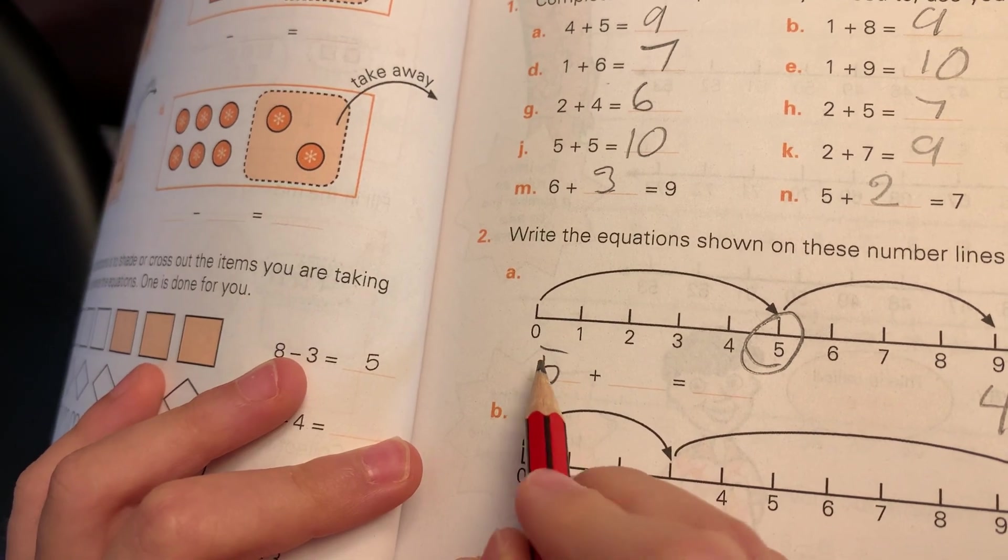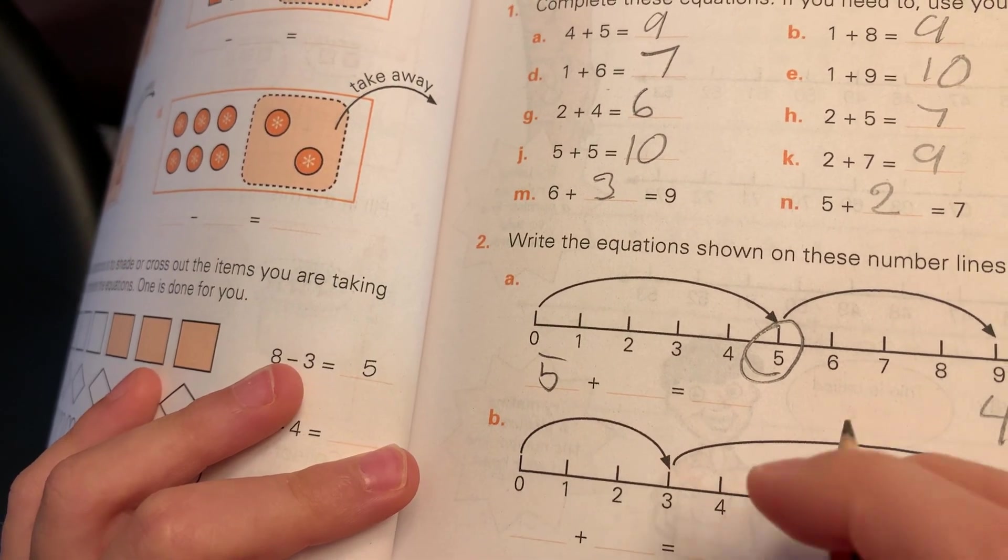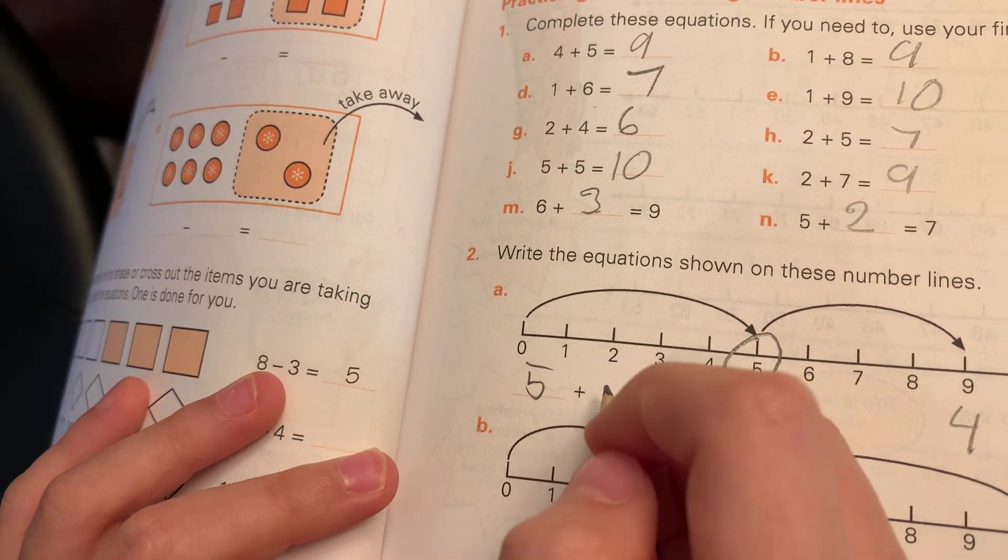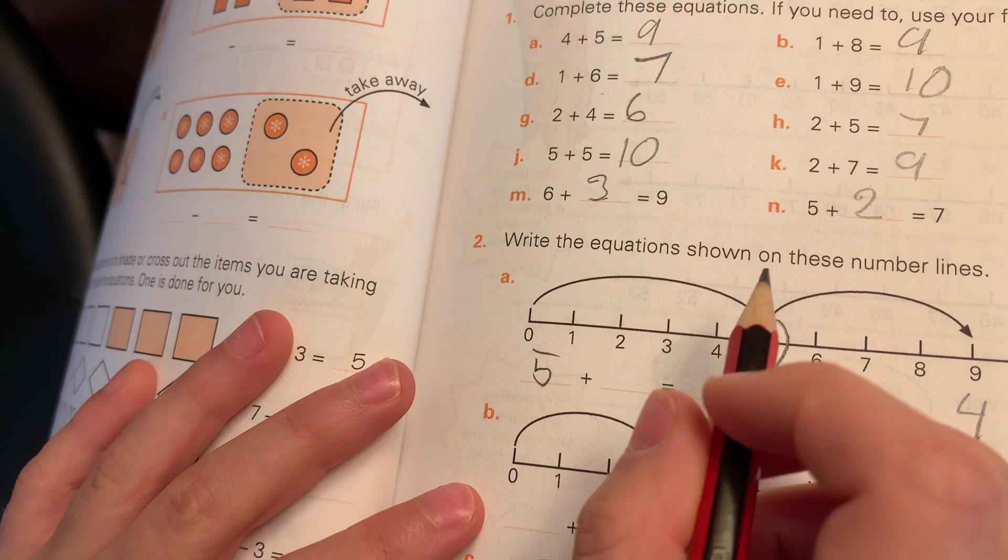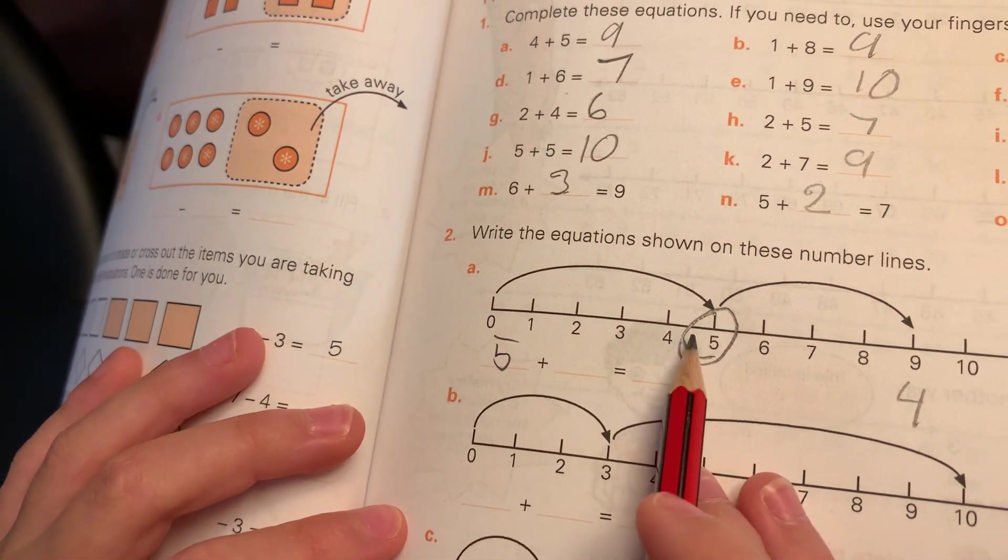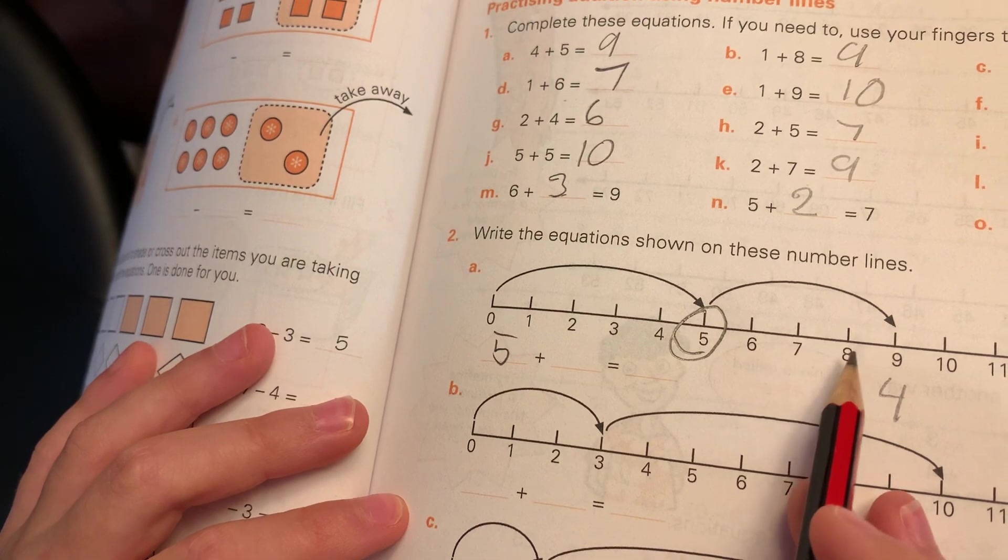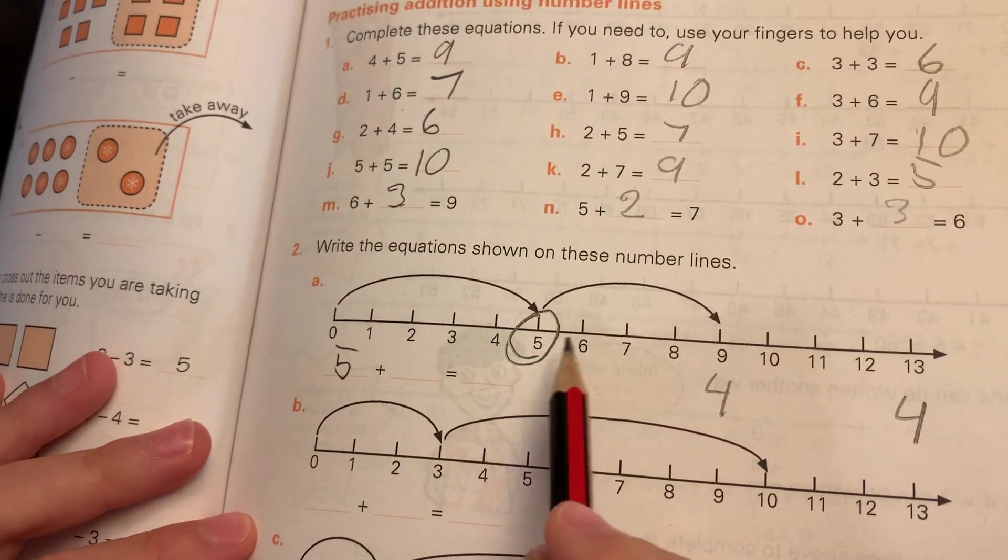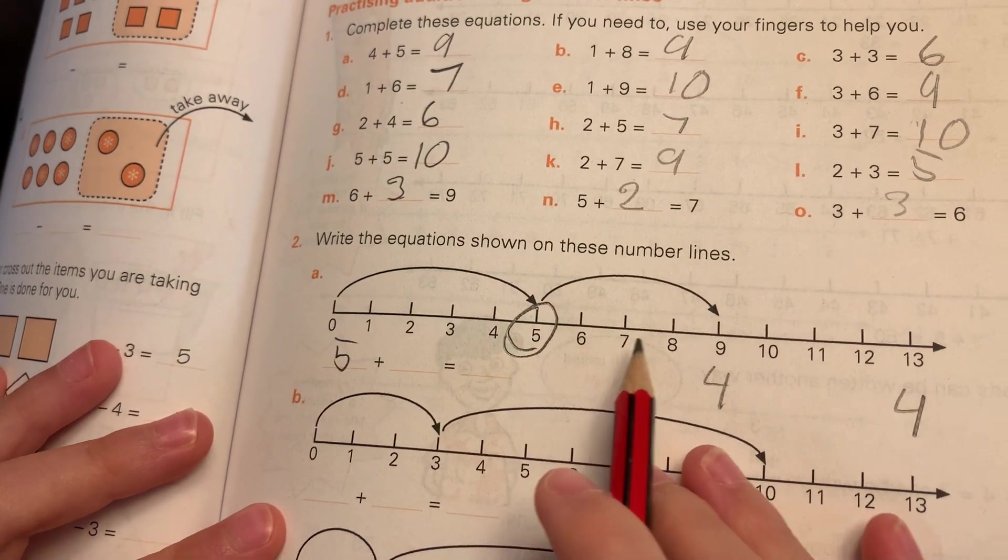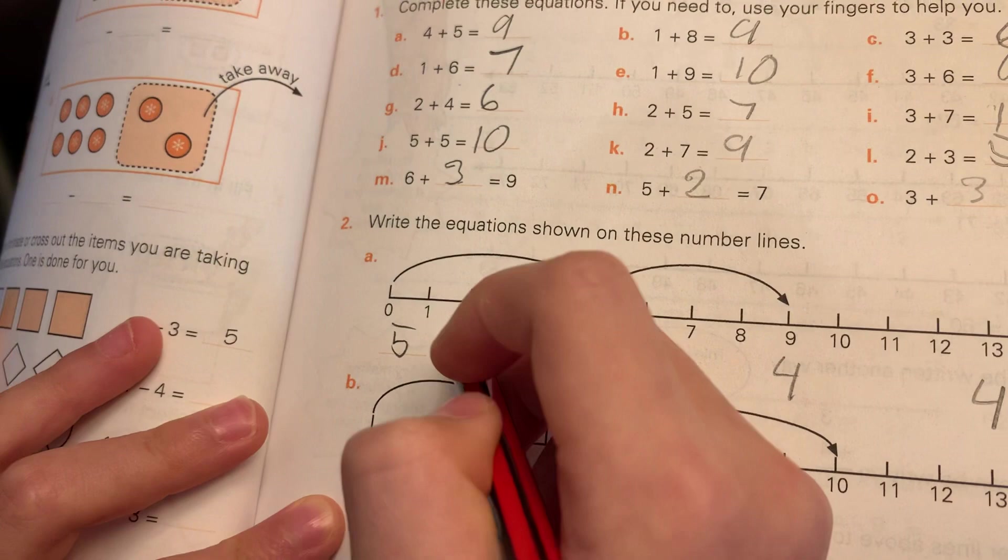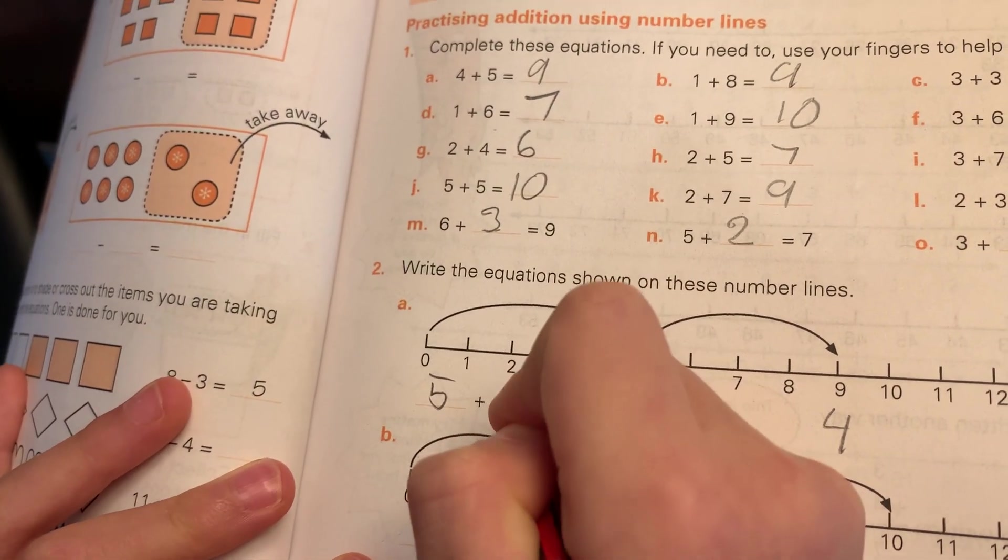So if I count on: 5, 6, 7, 10, 11, 12, 13. Okay. 1, 2, 3, 4, 5, 6, 7, 8. So 8 is going to be the answer.